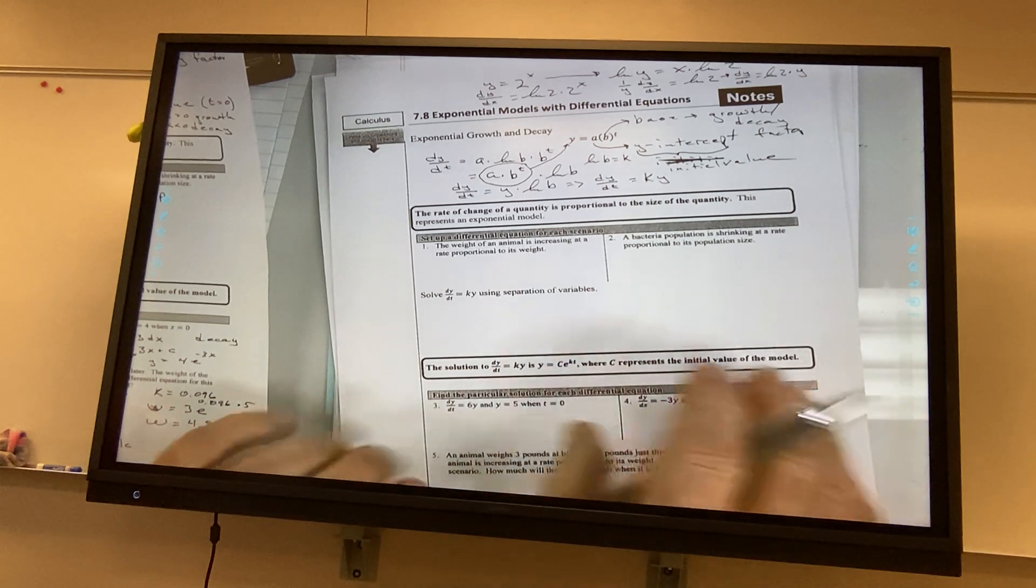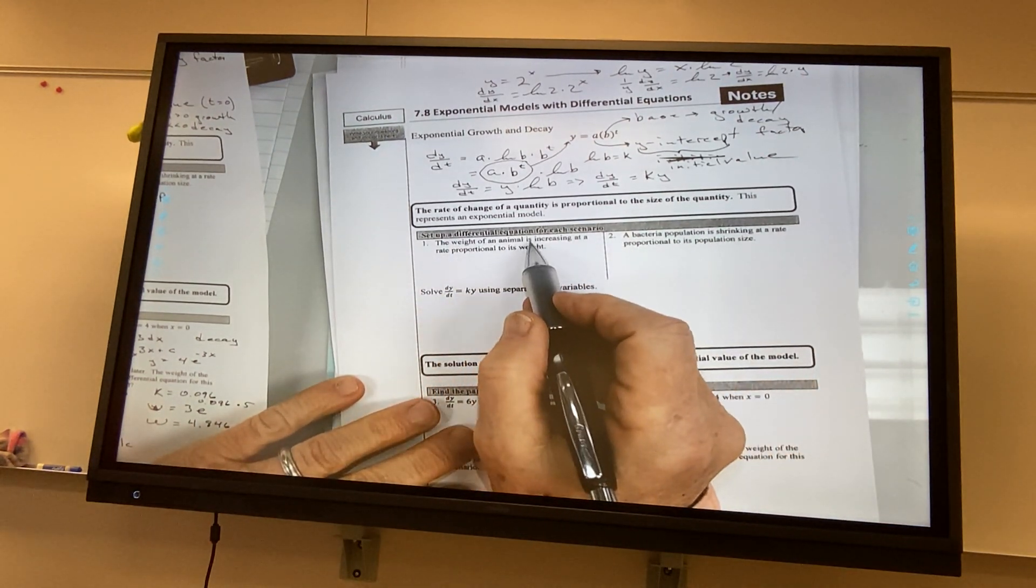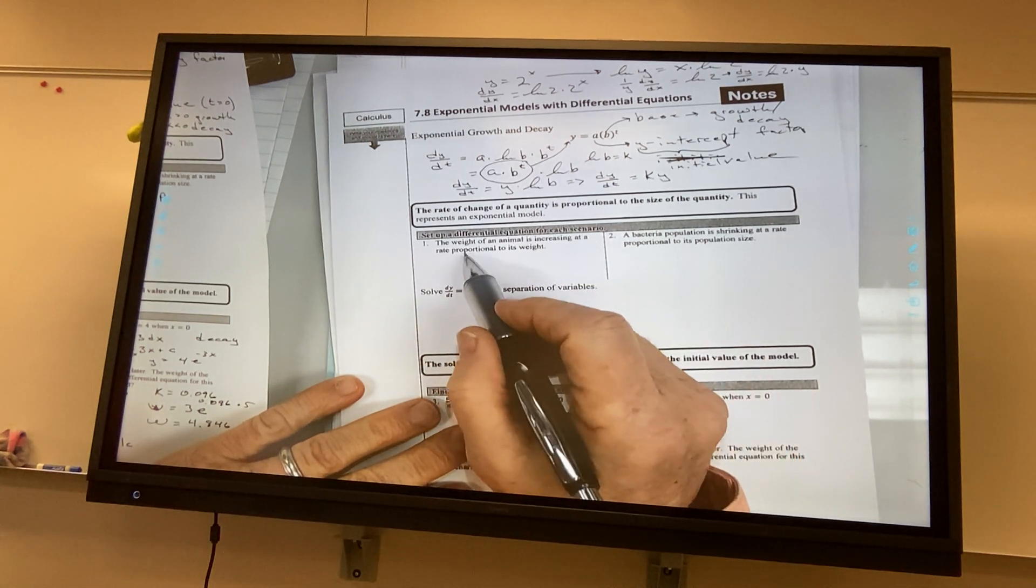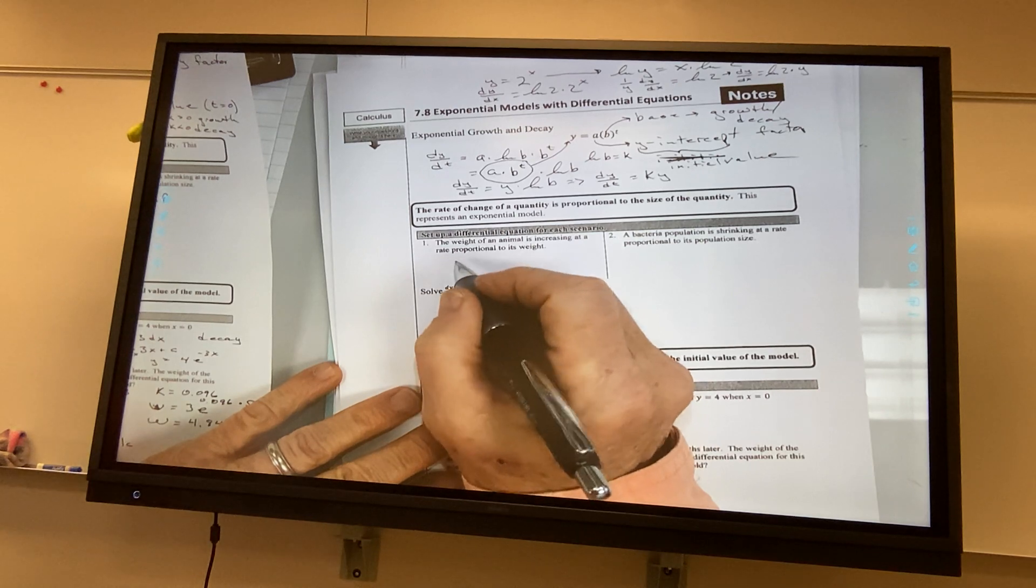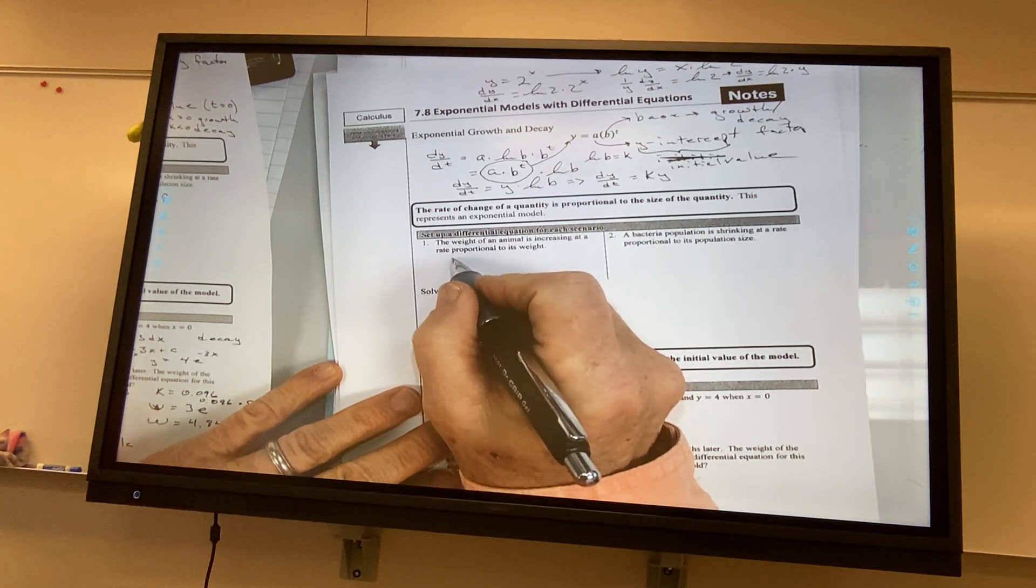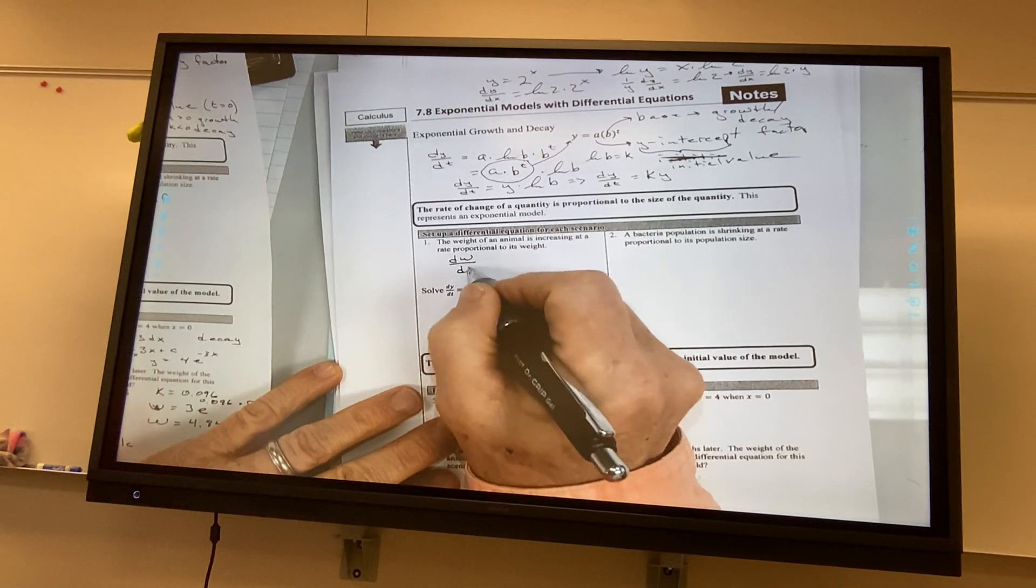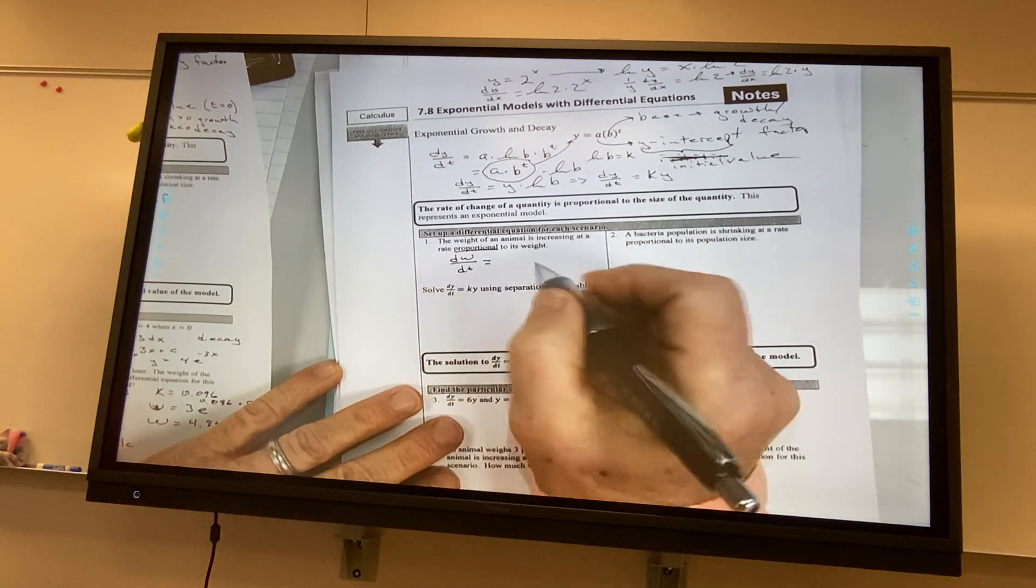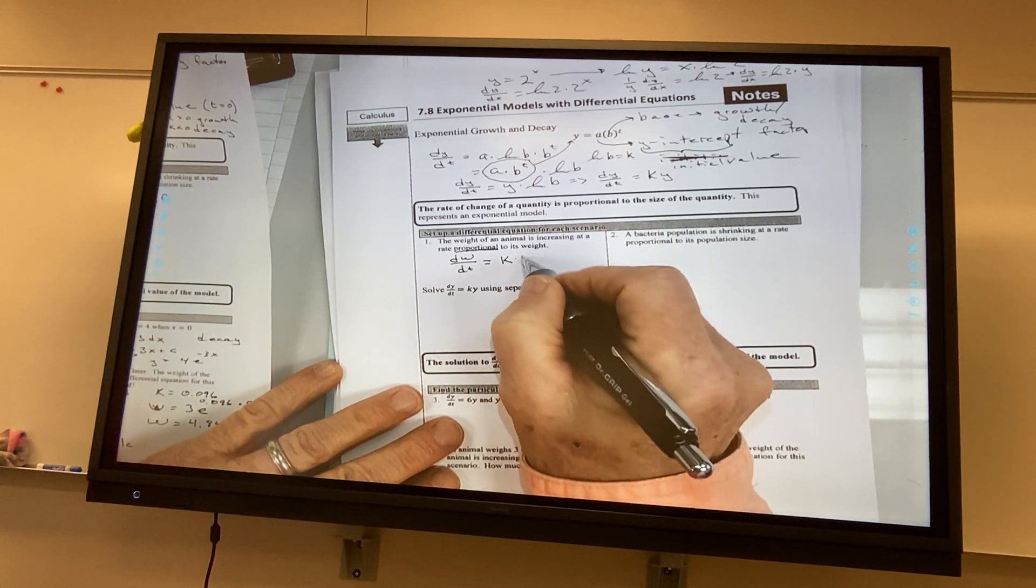Here's an example. Okay. I'm going to just set them up. The weight of an animal is increasing at a rate proportional to its weight. So, I'm increasing, so I have a rate, dw dt, and it's proportional. So, I got my k value times my weight.